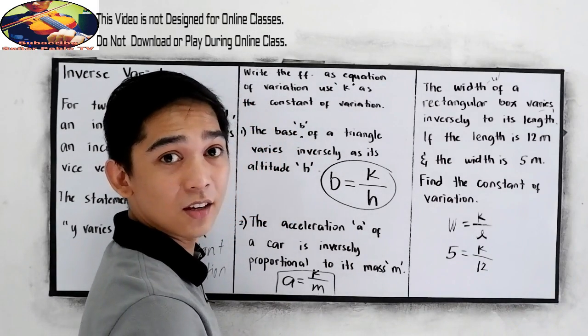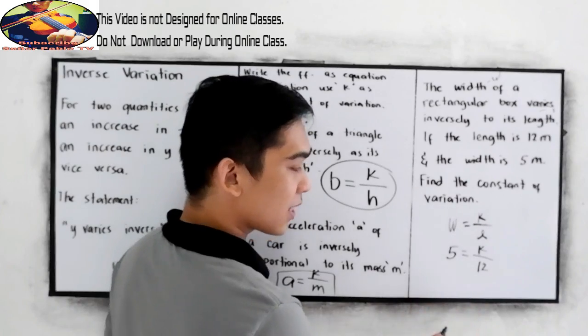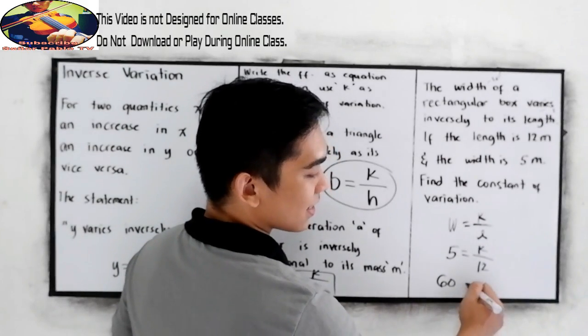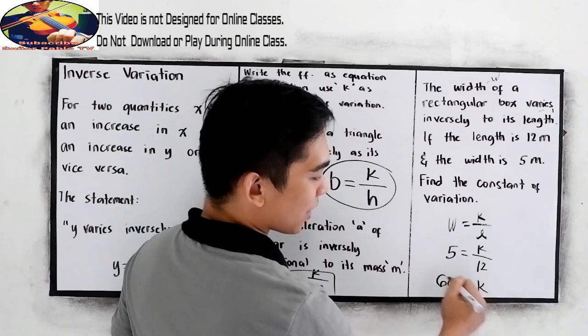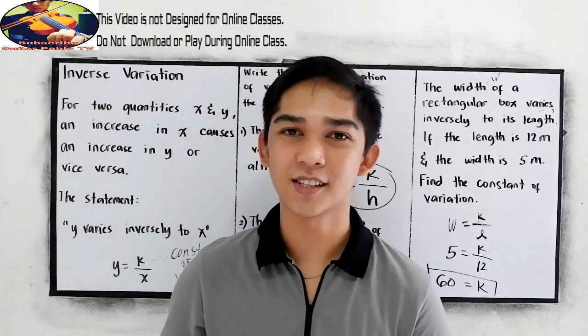to find K, cross-multiply, so 5 times 12, that is 60, is equal to our K. So, the value of K is 60.